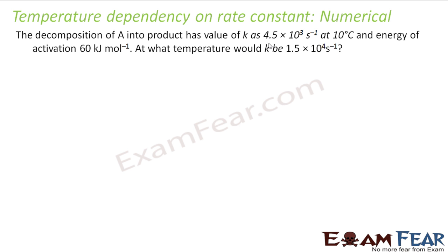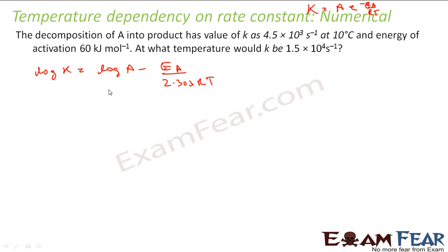The next problem: the decomposition of A into product has K given at 10 degree Celsius. The energy of activation is given. What would the temperature be if K is a new value K2? The formula we know is K equals A e to the power minus Ea by RT. We have K1 at temperature T1, and K2 at temperature T2 which we have to find. Let's put log on both sides to get log K equals log A minus Ea by 2.303 RT.